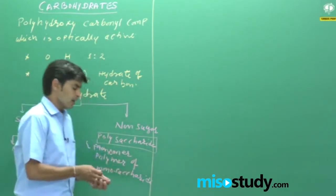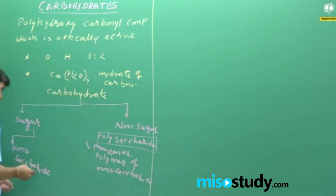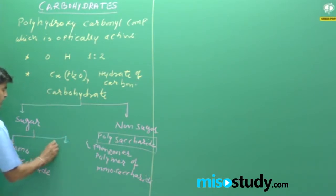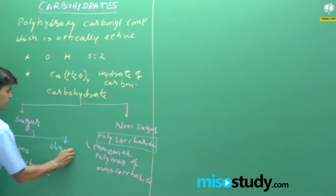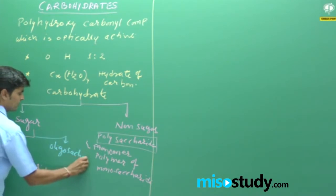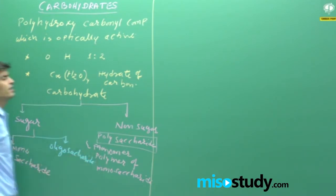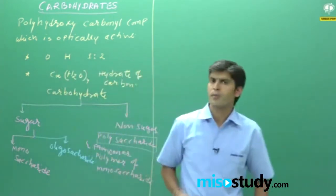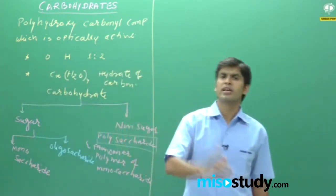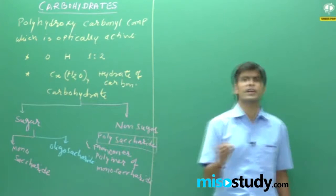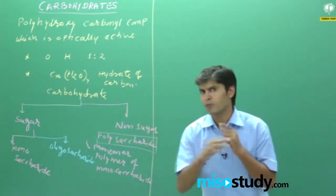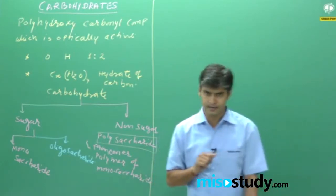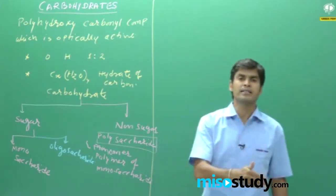The second category is oligosaccharides. Oligosaccharides are carbohydrates which are formed by two to ten monosaccharide unit combinations. Examples include disaccharide, trisaccharide, and tetrasaccharide.